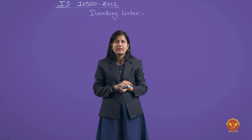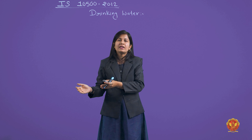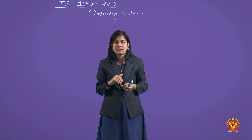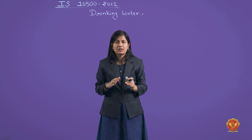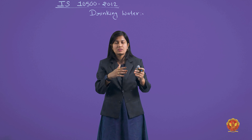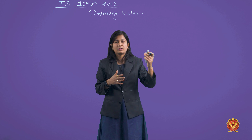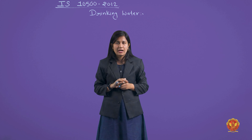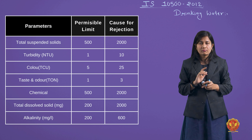आज हम Indian standard के according दो limits पढ़ेंगे। First is permissible limit in PPM (parts per million). Permissible limit वो limit होती है जो accepted हो — हम उस limit के अंदर water को drinking purpose के लिए consume कर सकते हैं। Cause of rejection वो limit है जिसमें हम water को treat भी नहीं करते। अगर कोई physical या chemical parameter उस limit तक reach कर जाए, तो हम उसको drinking purpose के लिए use नहीं करेंगे according to the IS code।